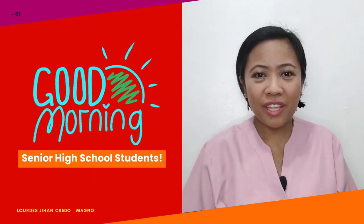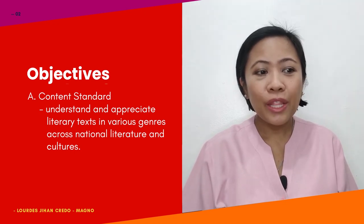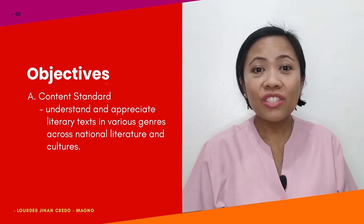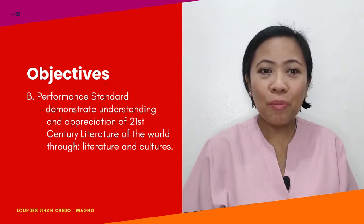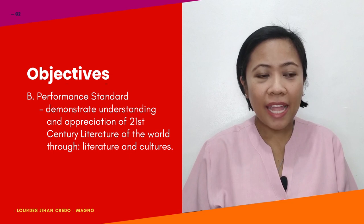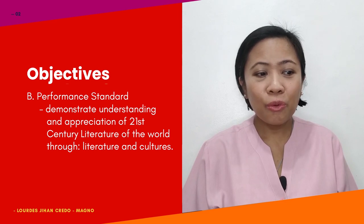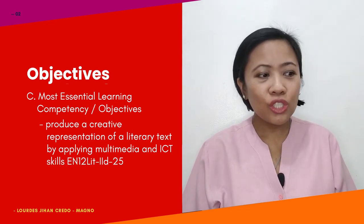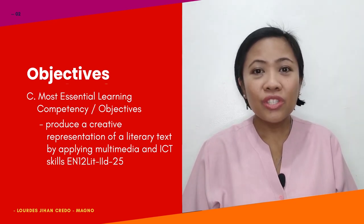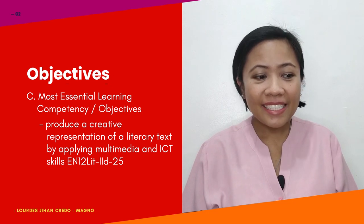Good morning, senior high school students. Are you ready to listen? Here are our objectives. For content standard: understand and appreciate literary texts in various genres across national literature and cultures. For performance standard: demonstrate understanding and appreciation of 21st century literature of the world through literature and cultures. For most essential learning competency: produce a creative representation of a literary text by applying multimedia and ICT skills.